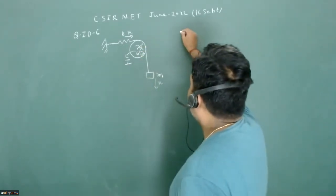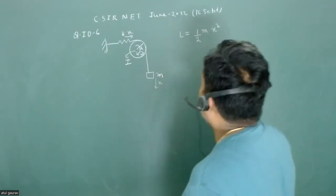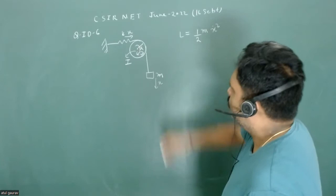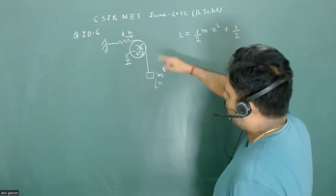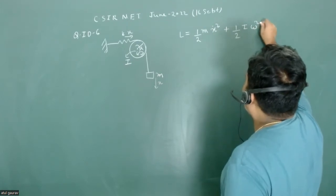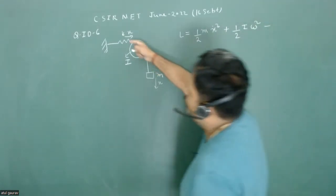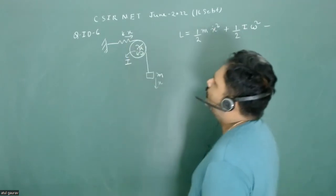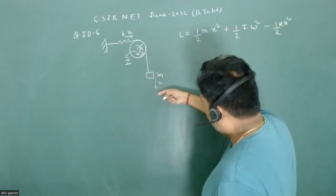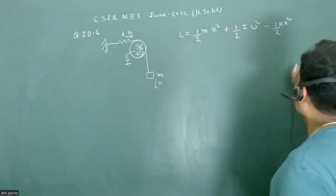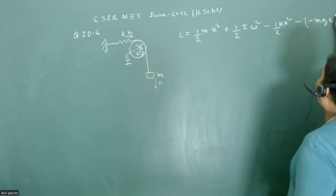The Lagrangian of the system is: L = (1/2) m x-dot squared — this is the linear kinetic energy of the mass — plus (1/2) I omega squared, the rotational kinetic energy due to the pulley's rotation. The potential energy has two parts: (1/2) k x squared from the spring extension, and minus mg x from gravity.